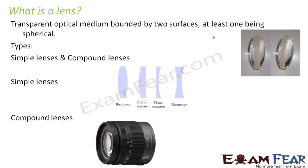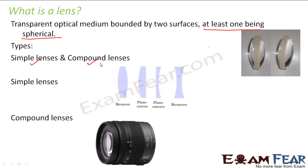Till now we talked about different spherical surfaces — concave, convex — as well as plane surfaces. A lens is a combination of any two surfaces such that at least one surface should be spherical. It can be both convex, both concave, one convex and one plane, or one concave and one plane. The arrangement we obtain is called a lens. There are two types: simple lenses and compound lenses.